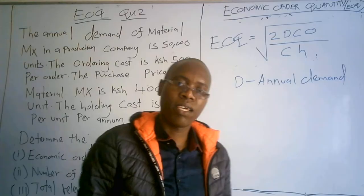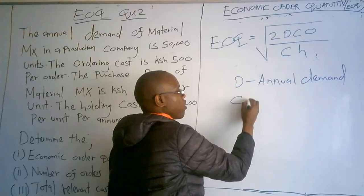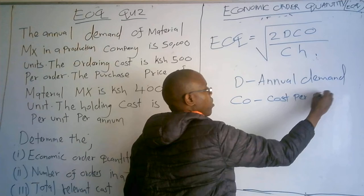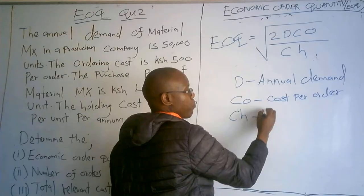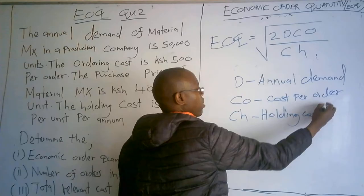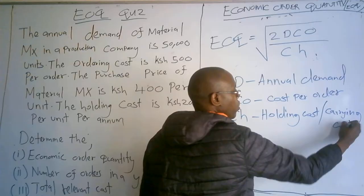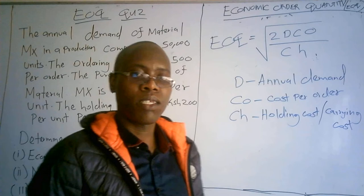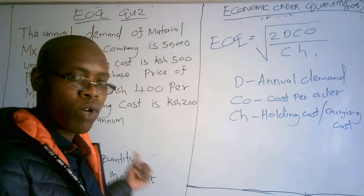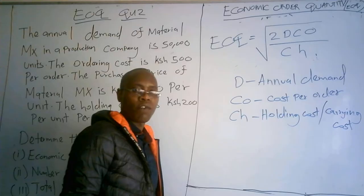D is the annual demand — meaning yearly demand. CO is the cost per order. CH is the holding cost, also called the carrying cost. This holding cost is most often calculated as a certain percentage of the purchase price, as we will see in later equations.